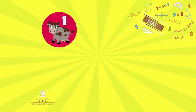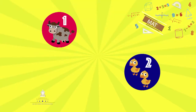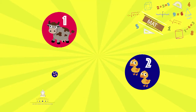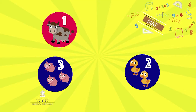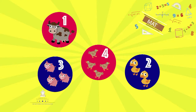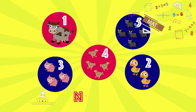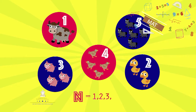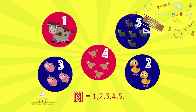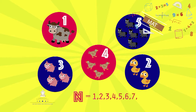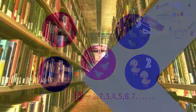Llegamos a los naturales y recordamos que se denomina como número natural aquel número que permite contar los elementos de un conjunto. El 1, 2, 3, 4, 5, etc. son números naturales.